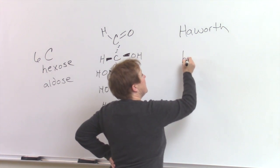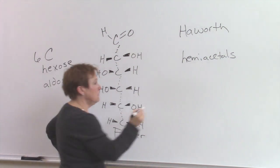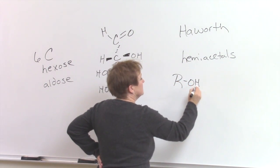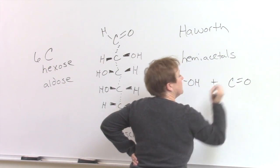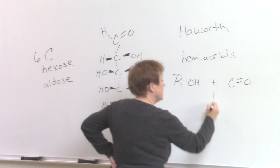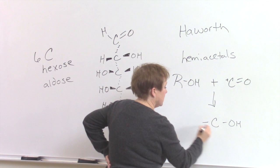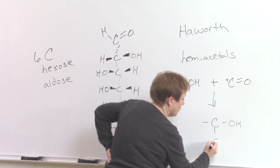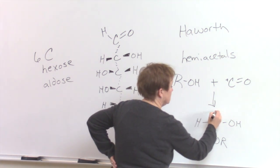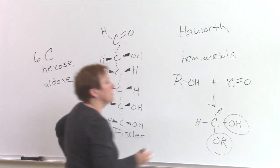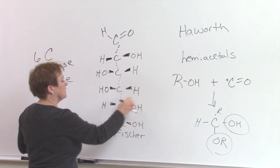What you want to do is remember in chapters before we made hemiacetals. We took an alcohol plus an aldehyde or ketone and ended up with this carbon having an OH on it and then an OR group on it. An OH and an OR gave us our hemiacetal.